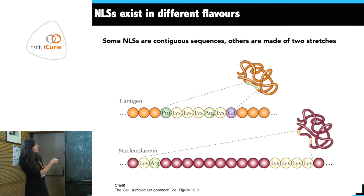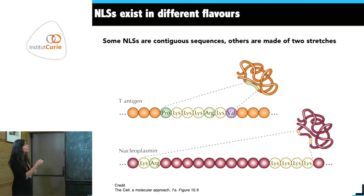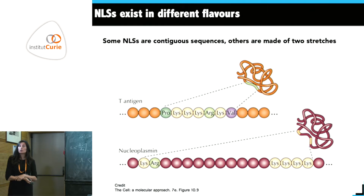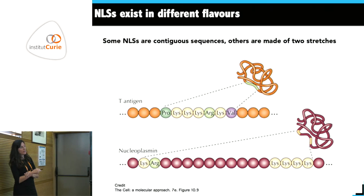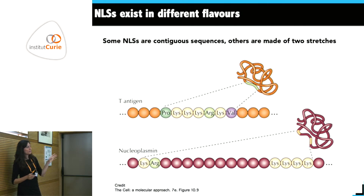NLS sequences come in two flavors. One is the monopartite type — a single stretch of basic residues all together. The other is the bipartite NLS, found in some proteins, where you have two stretches of basic residues separated by some intervening sequence. This story of bipartite NLSs will come back and be important later.